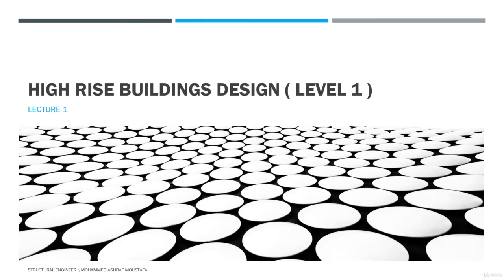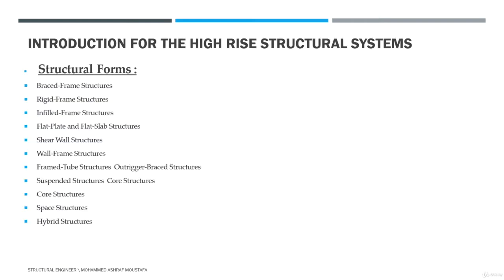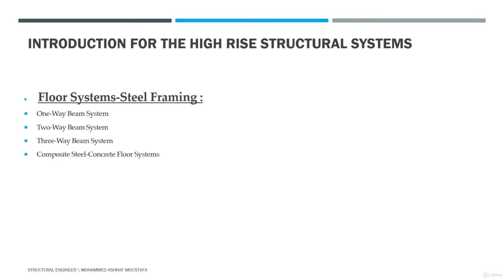The second topic is floor systems in reinforced concrete, which vary between one-way slabs and two-way slabs. Floor systems in steel framing also vary from one-way to two-way to three-way beam systems. Finally, composite steel-concrete floor systems will all be explained in detail.